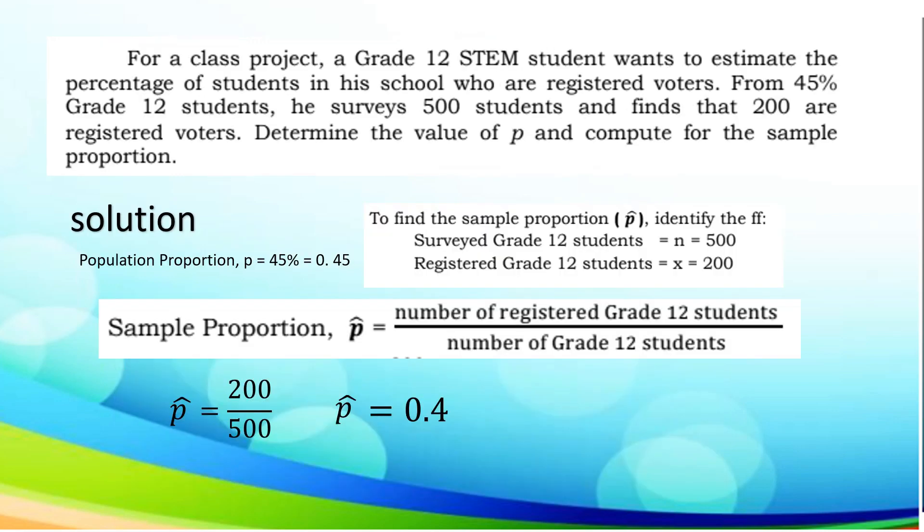Let us use this given example for us to deepen our understanding in finding the sample proportion and for the population proportion. For a class project, a grade 12 STEM student wants to estimate the percentage of students in a school who are registered voters. From 45% grade 12 students, he surveys 500 students and finds that 200 are registered voters. Determine the value of p and compute for the sample proportion.